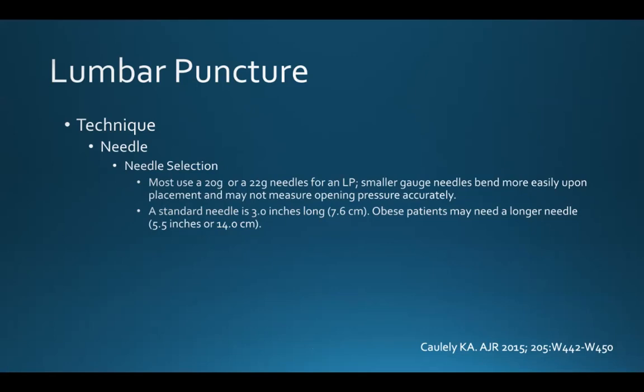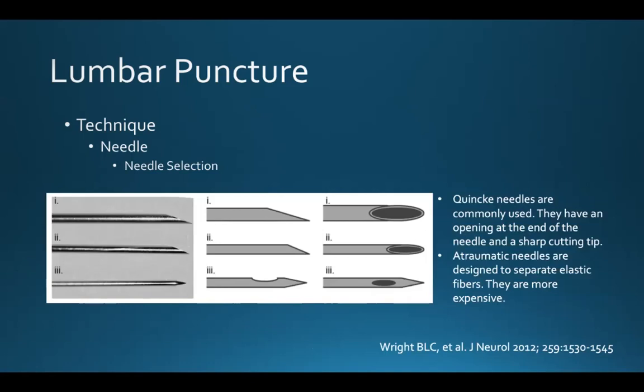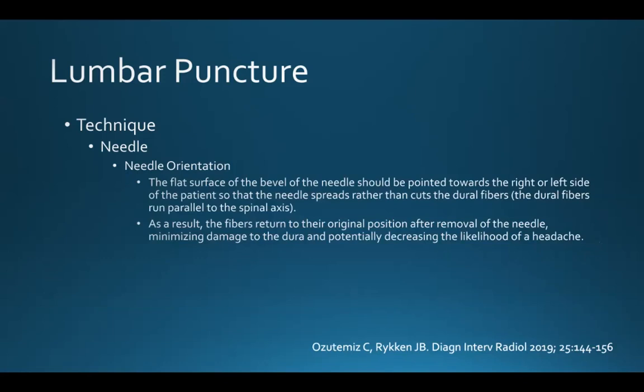Most people use a 20 or 22 gauge needle for an LP, because smaller gauge needles bend more easily and may not measure opening pressure accurately. A standard needle is 3 inches (7.6 cm) long, but obese patients may need a longer needle measuring 5.5 inches (14 cm). Quinke needles are most commonly used — they have an opening at the end and a sharp cutting tip. Atraumatic needles are designed to separate elastic fibers but are more expensive. The flat surface of the bevel should be pointed toward the right or left side of the patient so the needle spreads rather than cuts the dural fibers, which run parallel to the spinal axis. This allows fibers to return to their original position after needle removal, minimizing damage and potentially decreasing the likelihood of headache.